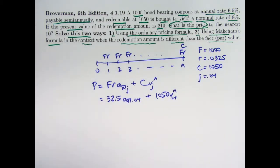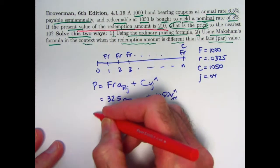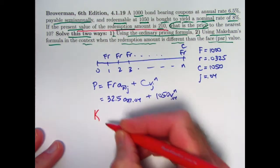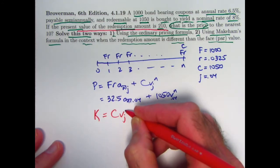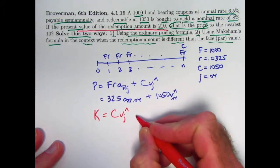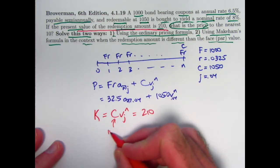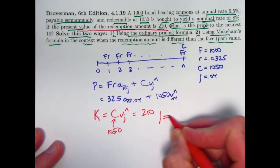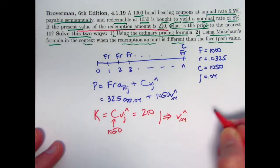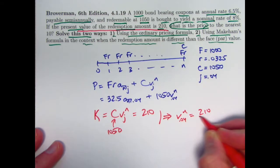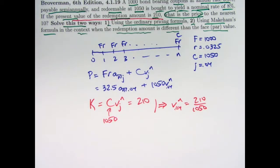What have we not used yet? We have not used the fact that the present value of the redemption amount is 210. K is typically the letter used for the present value of the redemption amount. So it's C times V-J to the N. We are told that is 210. And we know C is 1,050. Therefore, V sub J to the N power should be 210 divided by 1,050.